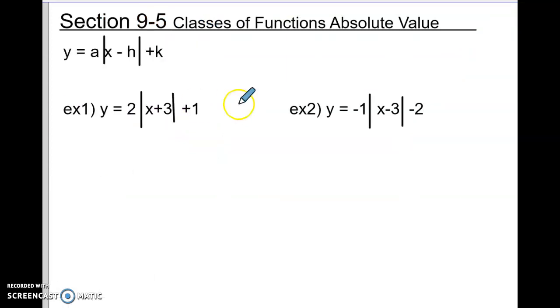You can try these. This one has vertex negative 3, 1. This one has vertex positive 3, negative 2. When you sketch them, you go to negative 3, 1, and because there's a positive in front, it's very easy. You just make your V.